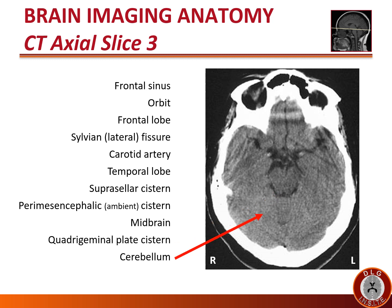The cerebellum lies posteriorly or dorsally to the brainstem still. Note there is still parenchyma centrally in the cerebellum — that's the clue that you're not yet up in the occipital area. The occipital area would have a fissure between the two sides, but the cerebellum does not. It has parenchyma in the middle called the vermis.